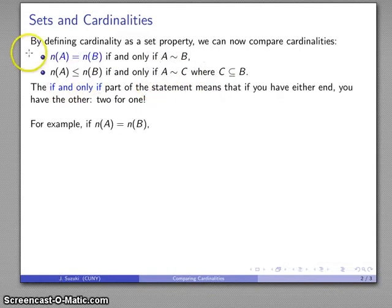So if I have the cardinality of A being equal to the cardinality of B, I know that A is similar to B, and vice versa. Likewise for if I know the cardinality of A is less than or equal to the cardinality of B, I know that I have a similarity to a subset.